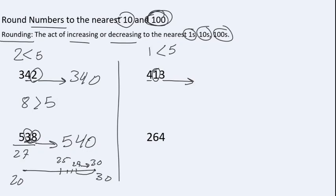When compared with five, we see that one is less than five. When it is less than five, we round down. To round down, we keep four the same and write two zeros in place of the digits in the tens place and the ones place. So we say that four hundred thirteen is close to four hundred.